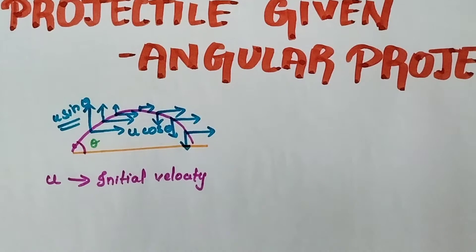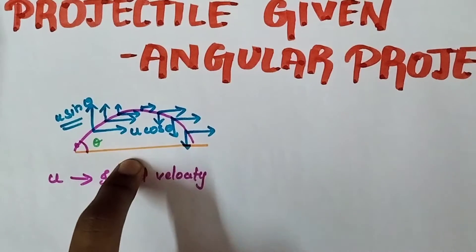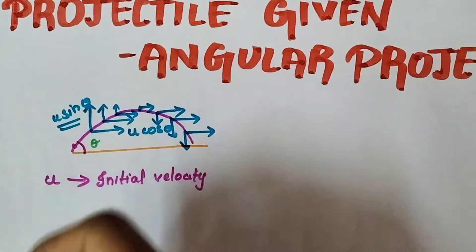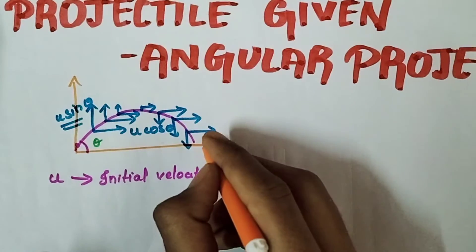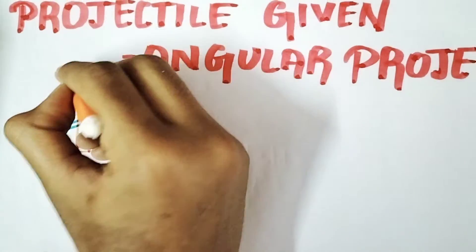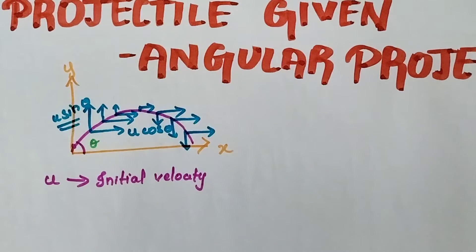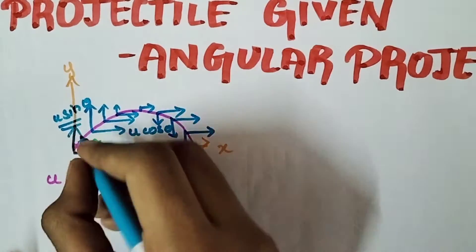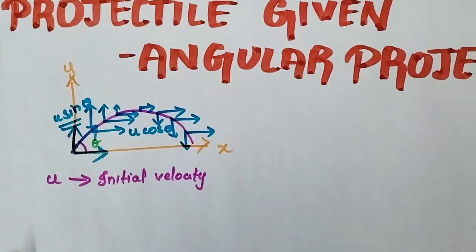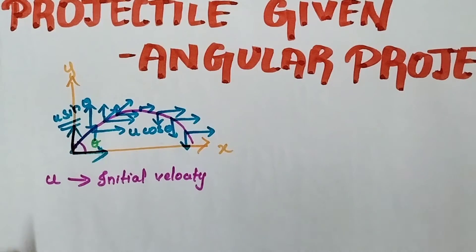In this scenario, the projectile obtains a parabolic path. Drawing the vertical component Y and horizontal component X: U sinθ is the vertical component, U cosθ is the horizontal component for this angle theta, and U is the resultant. The same way for every point along the trajectory.